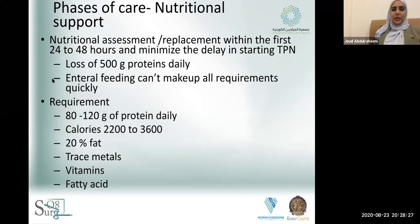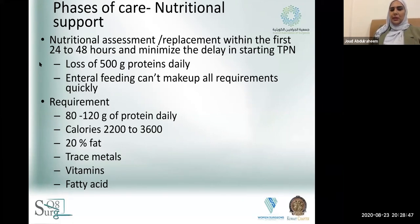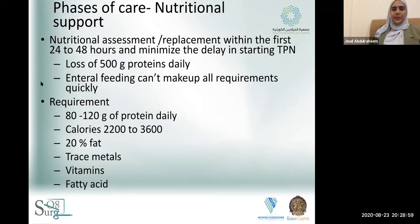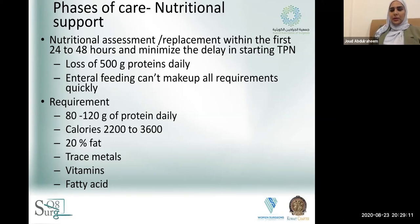Nutritional support is important. We need to start early — within the first 24 to 48 hours — putting a plan in place. Start TPN early even if the patient can eat, because they may lose up to 500 grams of protein daily, leading to muscle loss and neurological dysfunction. Internal feeding may not be enough to meet requirements, which are double that of a normal patient. They will need 80 to 120 grams of protein daily, increased caloric intake, 20% fat, and replacement of trace metals, vitamins, and fatty acids — all of which aid in fistula healing.